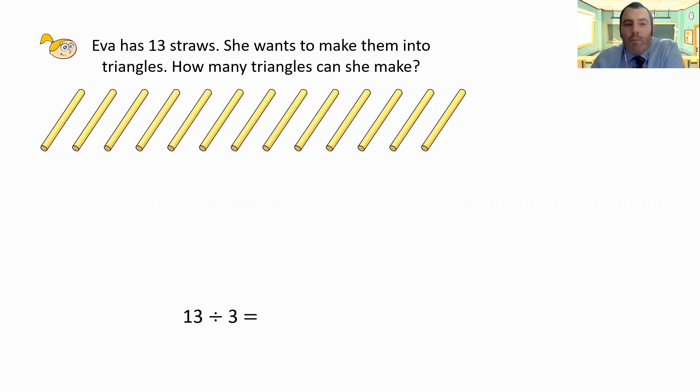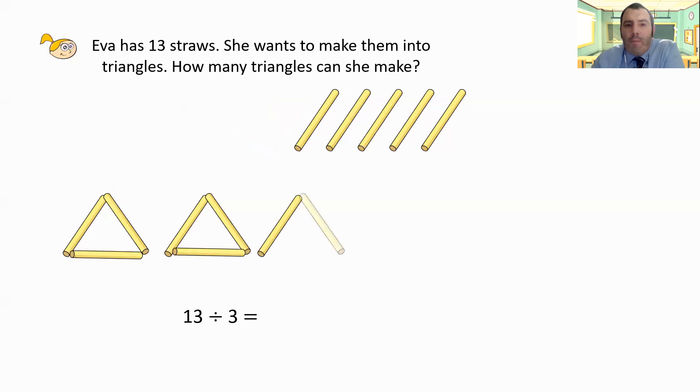So we can work this out. We can move the straws and make our triangles. So there's our first one, our second one, our third one. Yep, still got enough straws left. Oh, I've got one left over. But how many whole triangles have we got? We've got four whole triangles and one left over on its own.